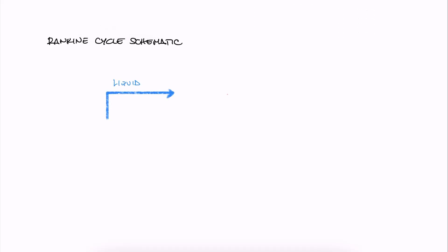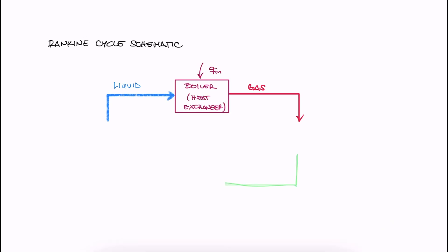Since the substance goes from liquid to gas when adding heat, we call the heat exchanger a boiler, and since the substance goes from gas to liquid when rejecting heat, we call that heat exchanger a condenser.